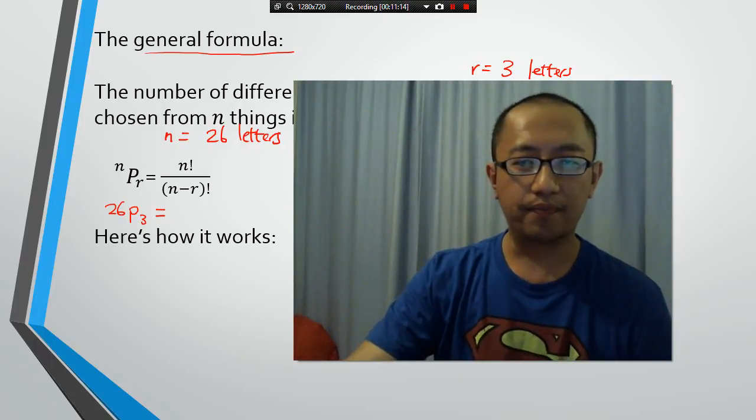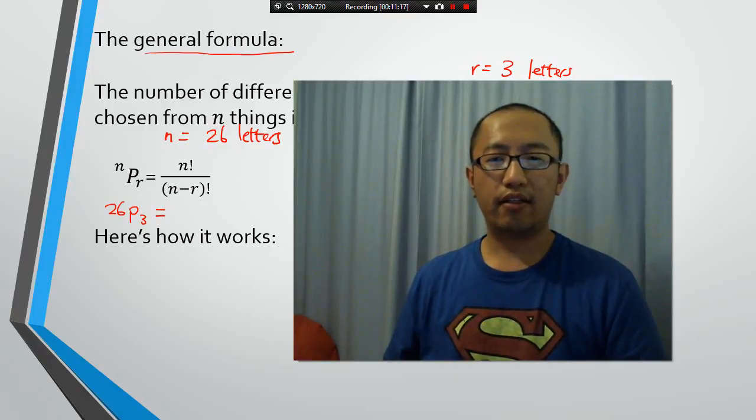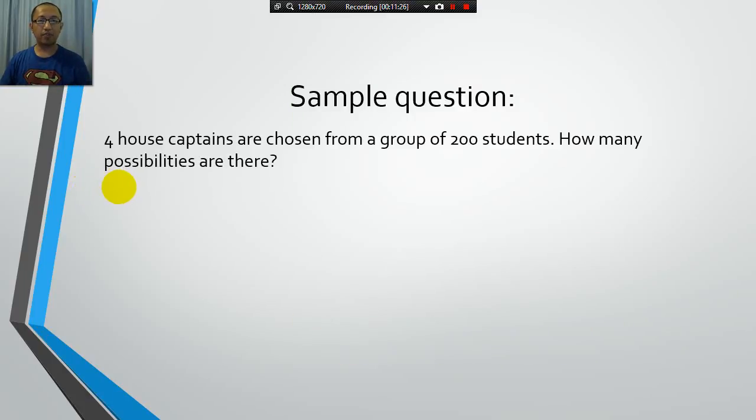Do I have a simple problem? You guys should now find this extremely easy now. Four house captains are chosen from 200 students. How many possibilities are there? Well, because the four house captains, each house has a different name, it'll be different, for example, if you place Jon in the house captain of, let's say, Gryffindor, or whatever you call them, compared to putting Jon in Slytherin. So, it depends on who you put on which house. So, the ordering is important, so we use permutation.